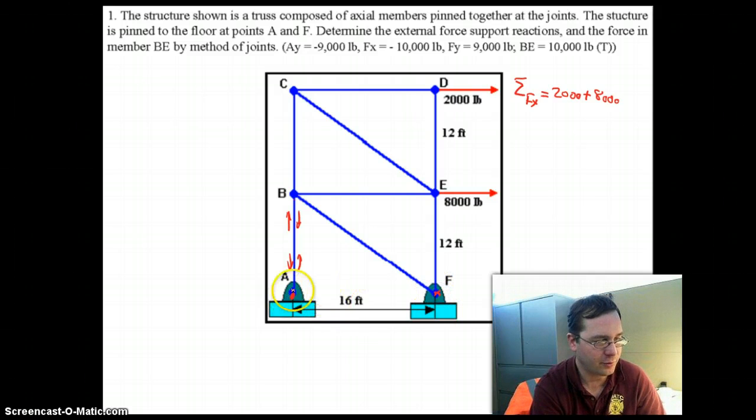If you look at point A, it can't provide any horizontal reaction because this A to B component would simply pivot on its pinned ends. So, it's going to be the x force at point F.